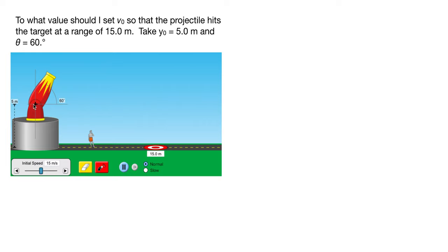We have an initial height of 5 meters and an angle of 60 degrees. So what we want is for our projectile to launch out of the cannon here and arc beautifully down so it hits the target.